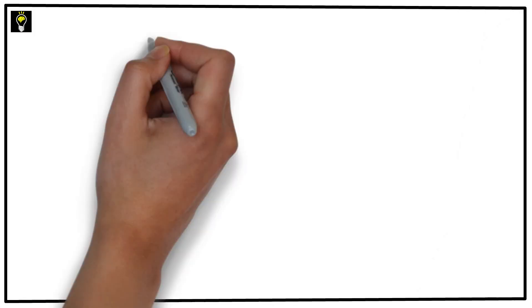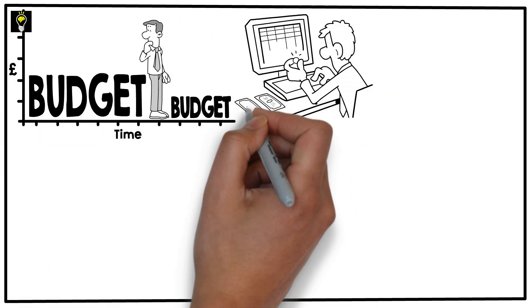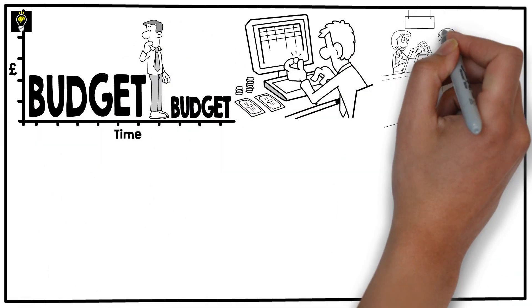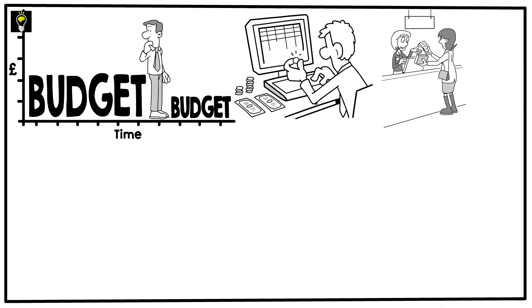This can involve making budgeting a priority, finding ways to save on everyday expenses, and looking for ways to reduce one's impact on the environment.